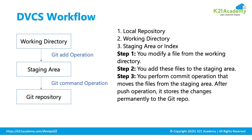The distributed version control system's workflow has three layers. First is the working directory, which is your local machine. Then comes the staging area, which is the intermediate saving area. Then comes the Git repository, which is the server. Files are present in the working directory; once you commit, they go to the staging area. Once you push, they move from the staging area to the repository server. This is the three-layer architecture of the Git workflow.